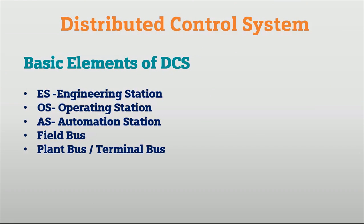What are the basic elements of DCS? Engineering station, operating station, automation station, field bus, plant bus, or terminal bus — these are the main elements of a DCS control system. We will see these in detail in the next slide.